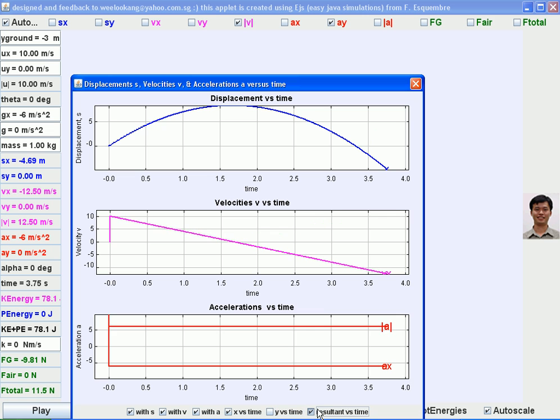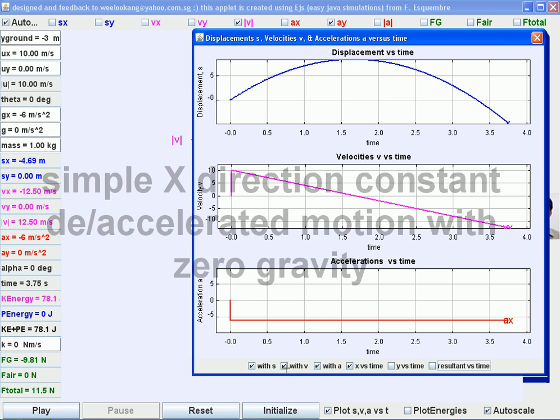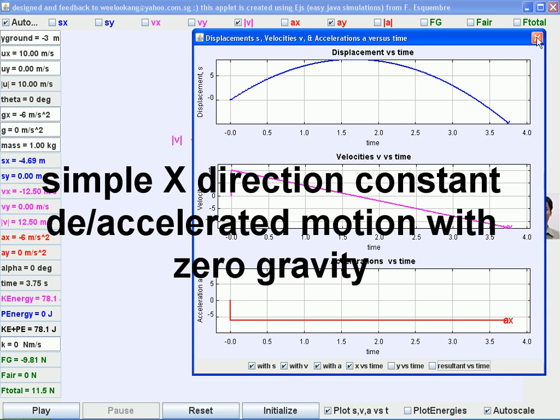Unclick the y versus t and the resultant because we are just interested in the x direction. So you can see that this is how 1D x direction constant acceleration motion looks like.